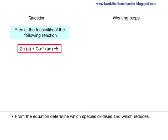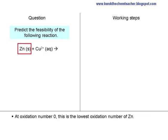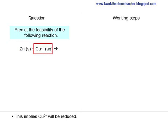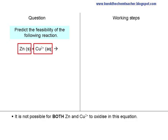From the equation, determine which species oxidizes and which reduces. At oxidation number zero, this is the lowest oxidation number of zinc. Hence, you will expect zinc to oxidize. This implies copper-2-plus will be reduced. It is not possible for both zinc and copper-2-plus to oxidize in this equation, as it violates the principles of a redox reaction.